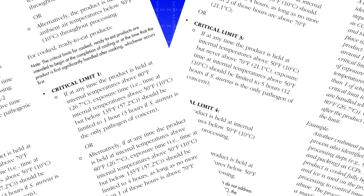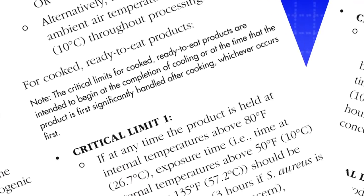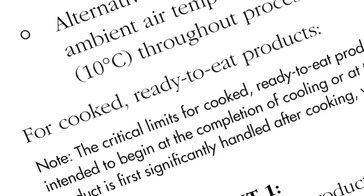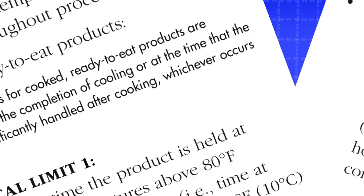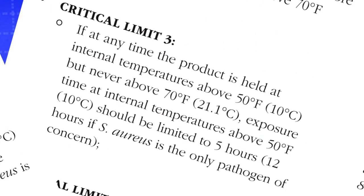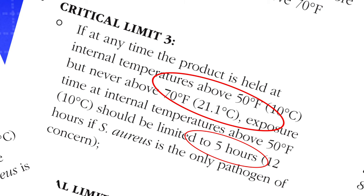The processor looks up the critical limit option under Cooked Ready-to-Eat and chooses critical limit option 3, which allows more processing time than the previous example. Here, the processor has up to five hours cumulatively between 50 and 70 degrees to complete backing, picking, and packing.